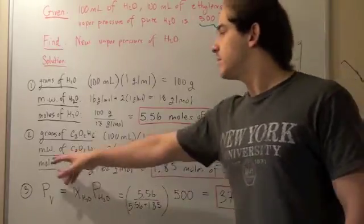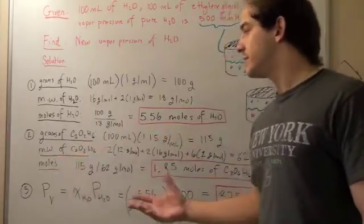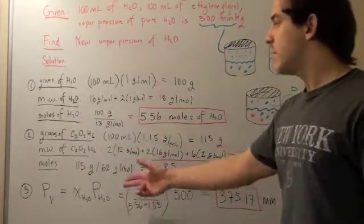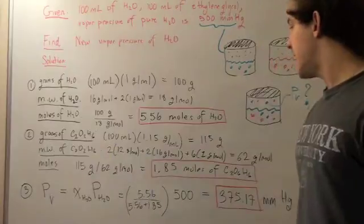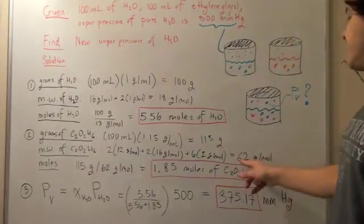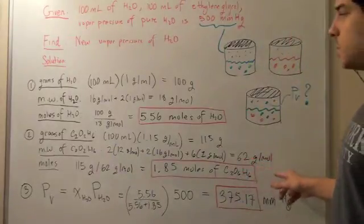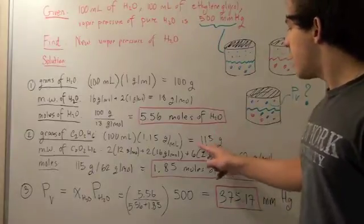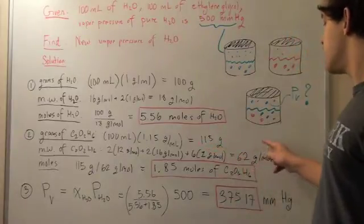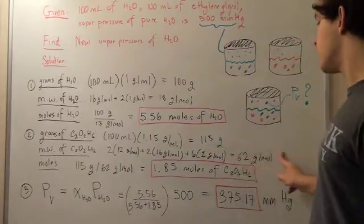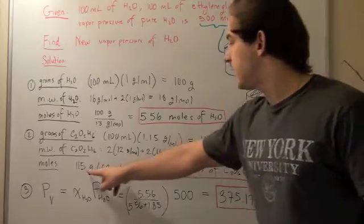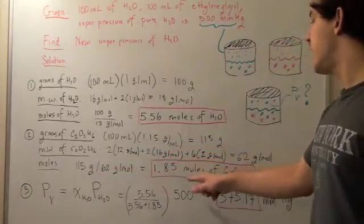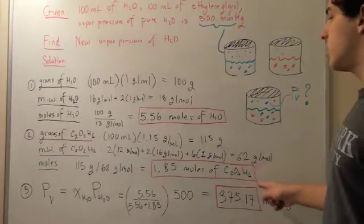Our next step is to find the molecular weight of ethylene glycol. We follow the same process, add up the atomic weights, and we get 62 g/mol. Finally, to find the moles, we take 115 grams divided by 62 g/mol, which equals 1.85 moles of ethylene glycol.